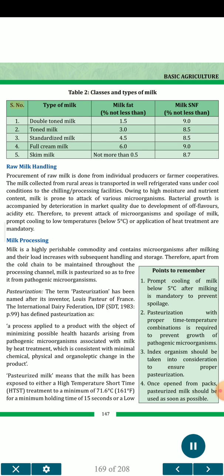Classes and types of milk (Table 2): Double-toned milk has minimum 1.5% milk fat and 9.0% milk SNF. Toned milk has minimum 3.0% fat and 8.5% SNF. Standardized milk has minimum 4.5% fat and 8.5% SNF. Full cream milk has minimum 6.0% fat and 9.0% SNF. Skim milk has not more than 0.5% fat and 8.7% SNF.